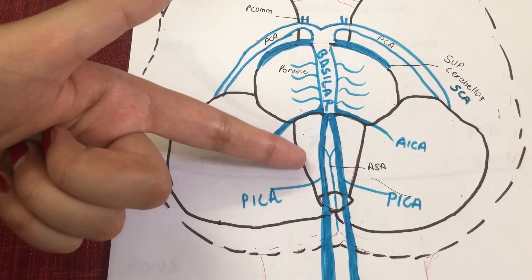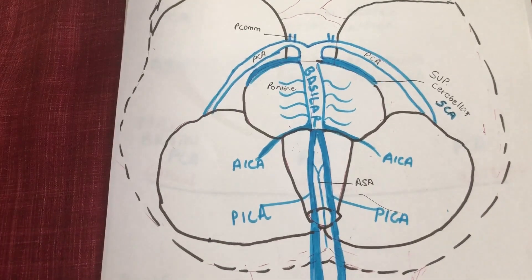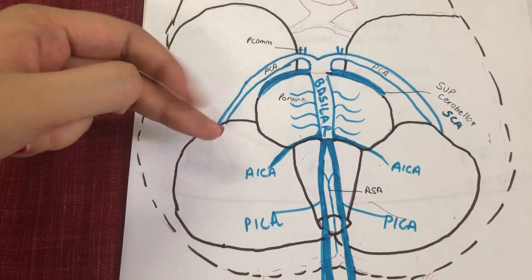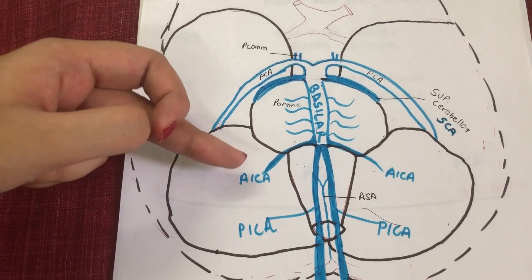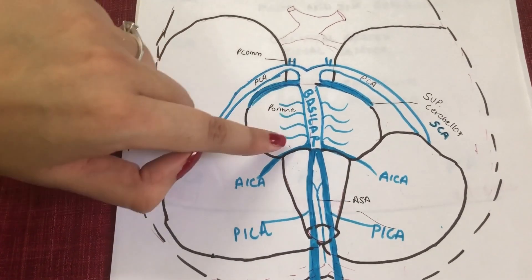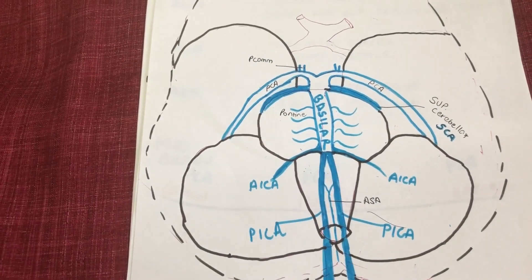At the pontine medullary junction, the two vertebral arteries combine together and form the basilar artery. This is also where they give out another tributary known as the AICA, or the anterior inferior cerebellar artery. This AICA is coming out from the lateral sides of the pons and entering the middle and inferior part of the cerebellum.